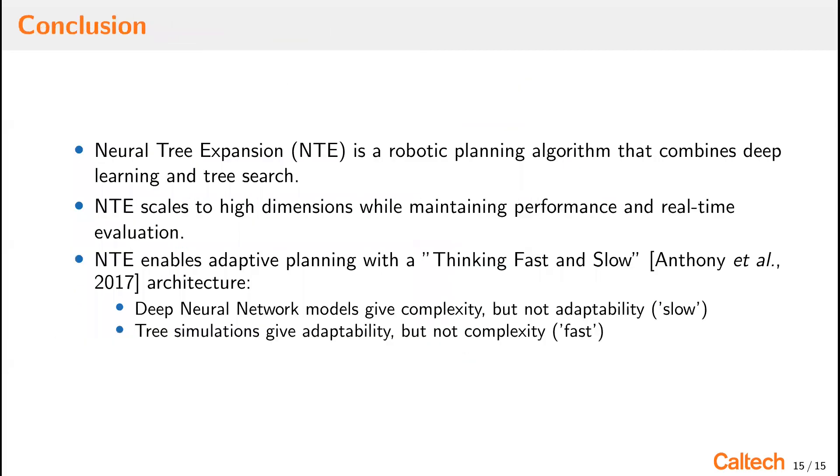In conclusion, neural tree expansion is a robotic planning algorithm that combines deep learning and tree search. Through experimental and simulated evaluation, we show that NTE scales to high dimensions while maintaining performance and real-time evaluation. We think NTE is a promising robotics planning framework because it provides a thinking fast and slow architecture. The deep neural network models give complexity but not adaptability, and the tree simulations give adaptability but not complexity. By combining these two, we arrive at a thinking fast and slow architecture. Thank you for listening to our talk. We look forward to answering questions at the live session.